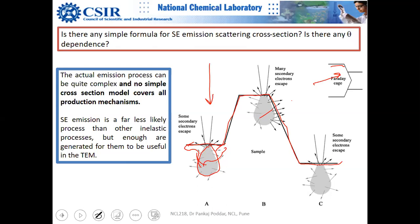The reason secondary electron images look so natural is that this area is hidden — behind the hill — so it will appear darker, just as we naturally see objects when light comes from one direction creating a shadow effect.